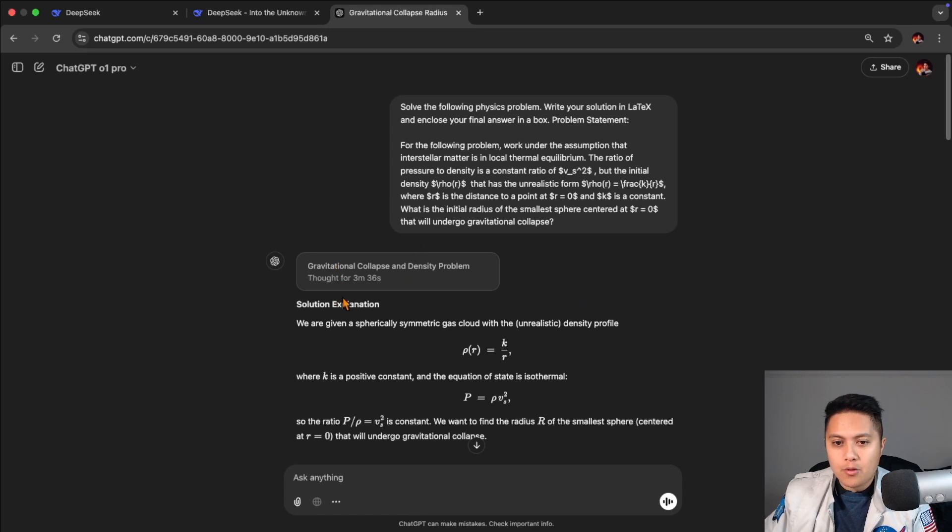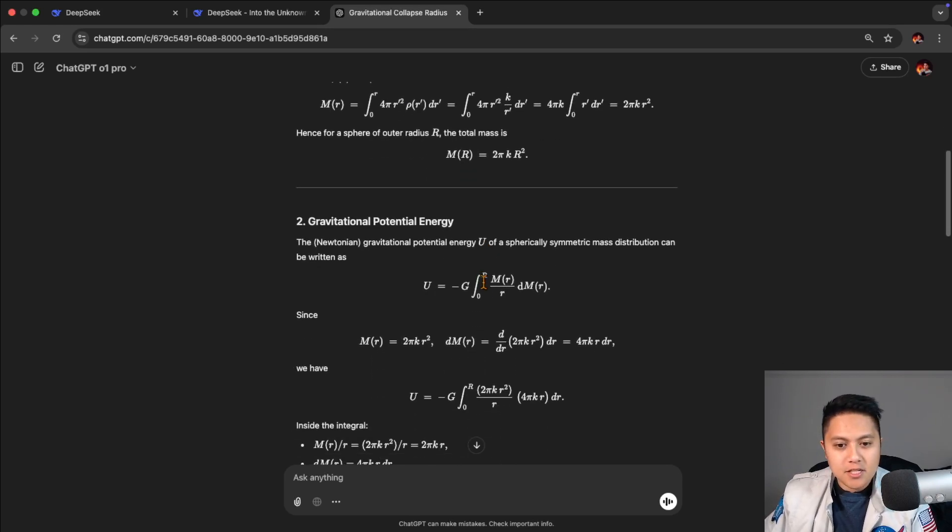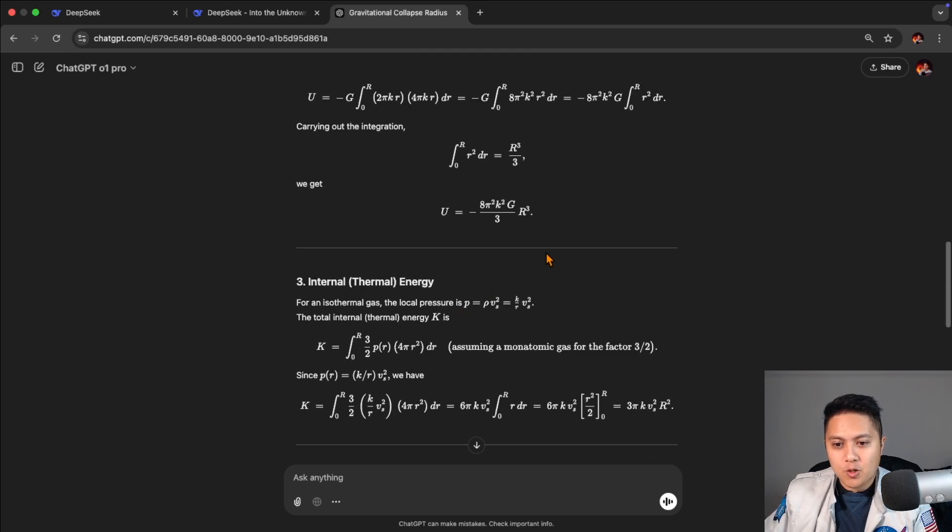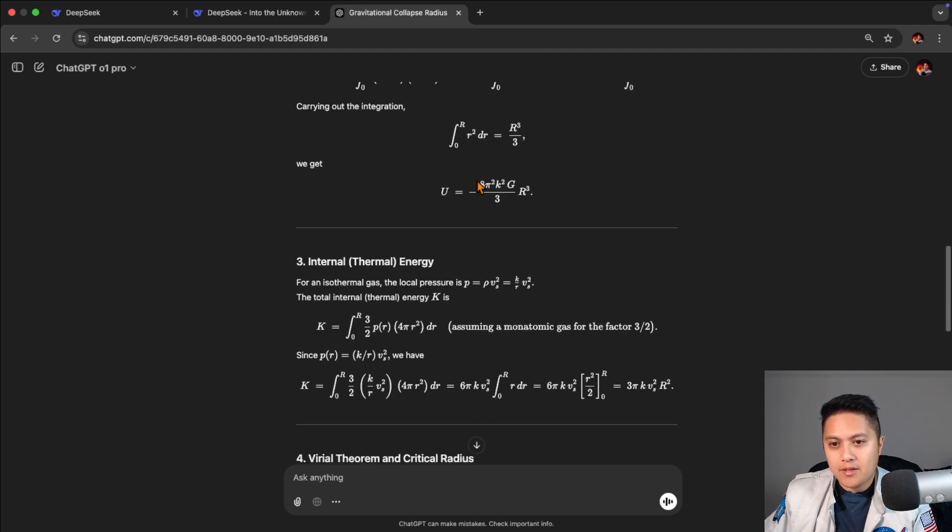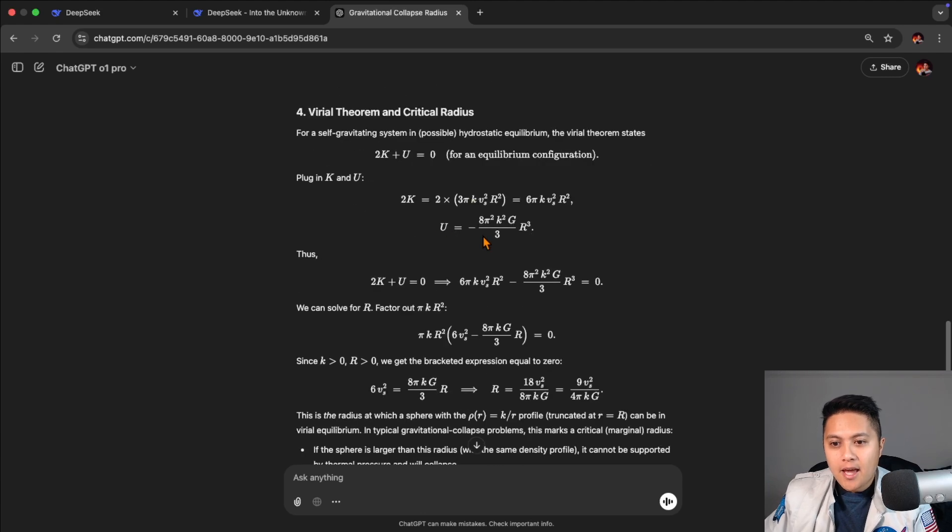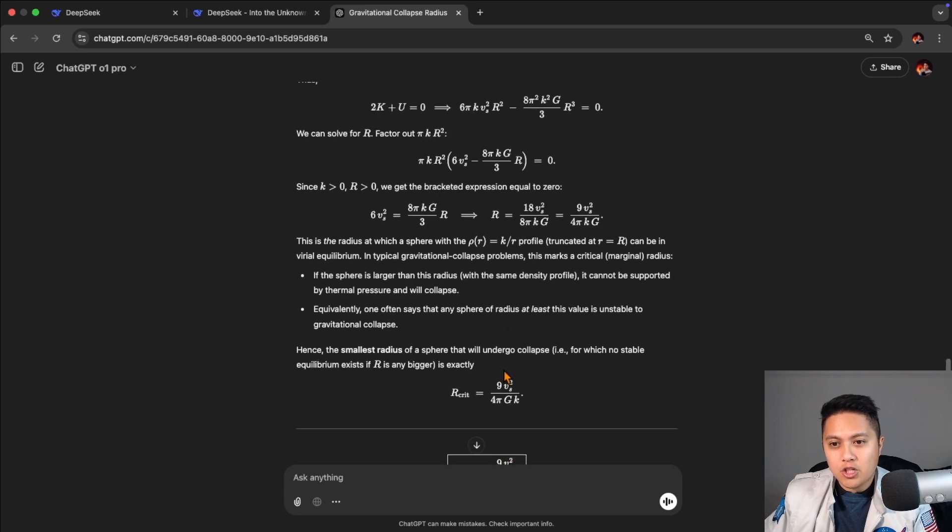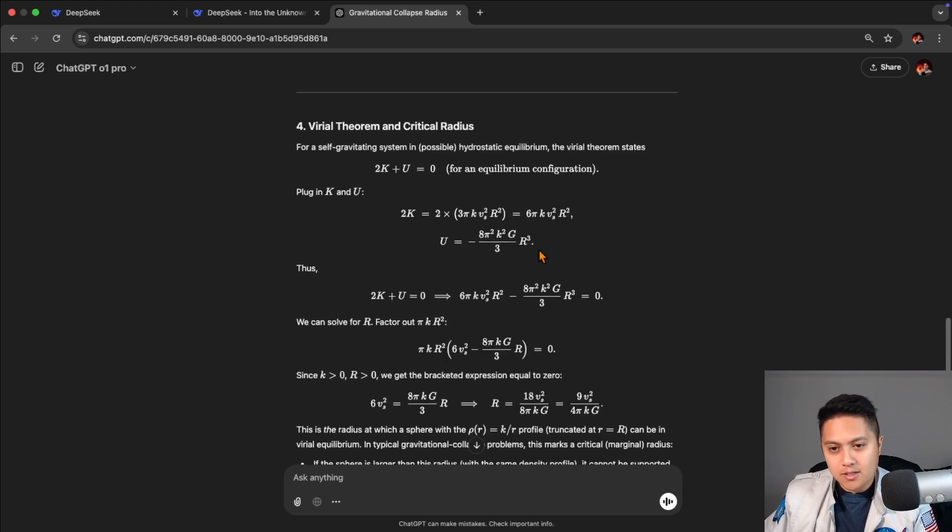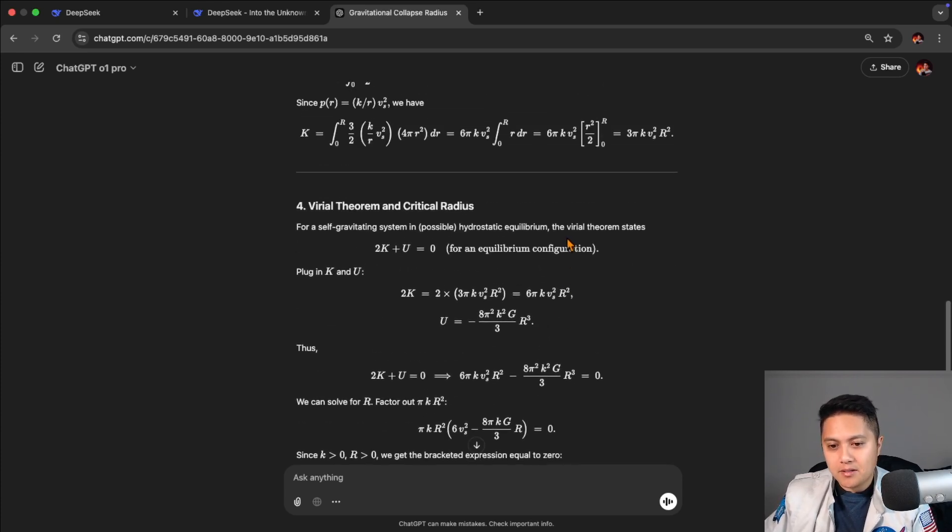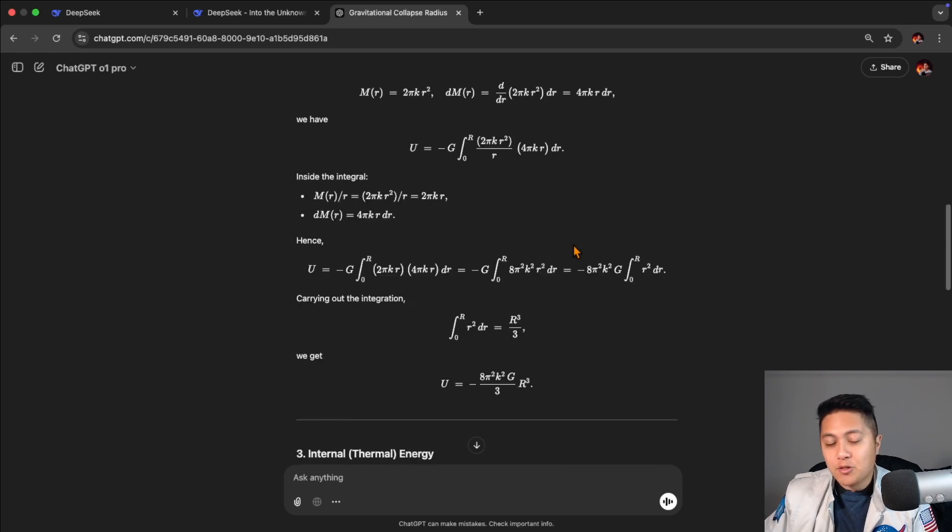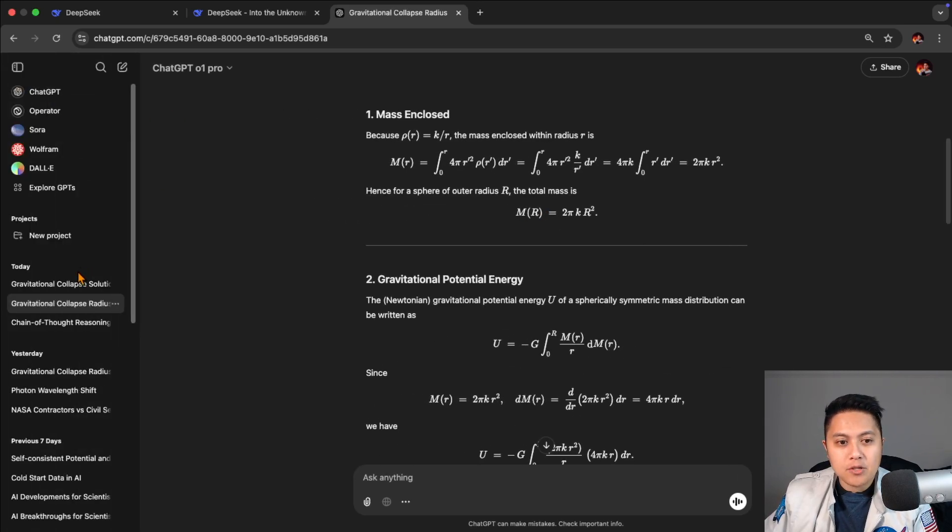What about O1 Pro though? So O1 Pro thought for three and a half minutes roughly, and it like DeepSeek went on the right path in terms of identifying it needs to equate the two energy expressions. And indeed, it gets the value of nine Vs squared over four pi gk at the end. So it did the same steps got the same result. And that was just for the first part.